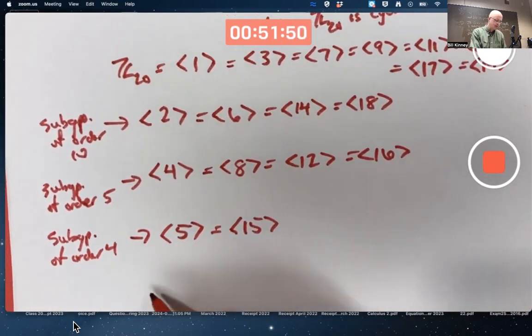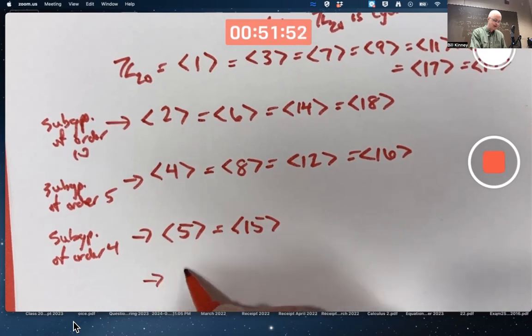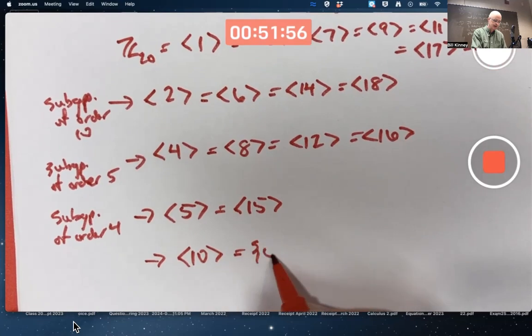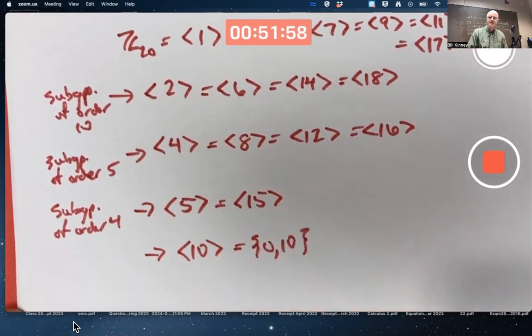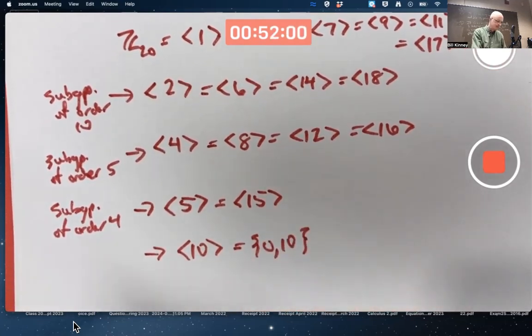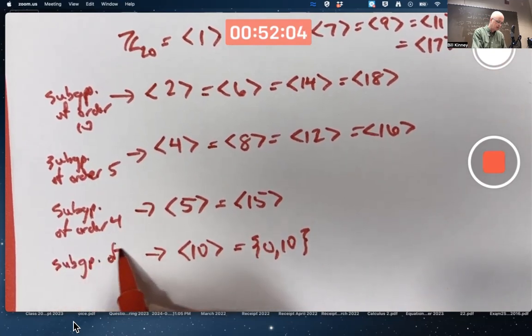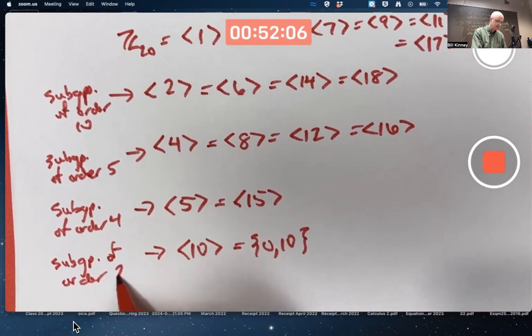And what about a subgroup of order 2? That would be the one generated by 10. It's just got two elements in it: 0 and 10. 10 is the only generator. That's a subgroup of order 2.